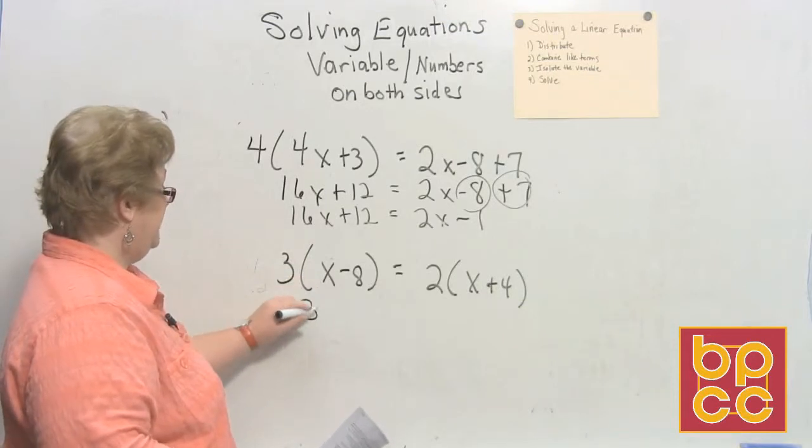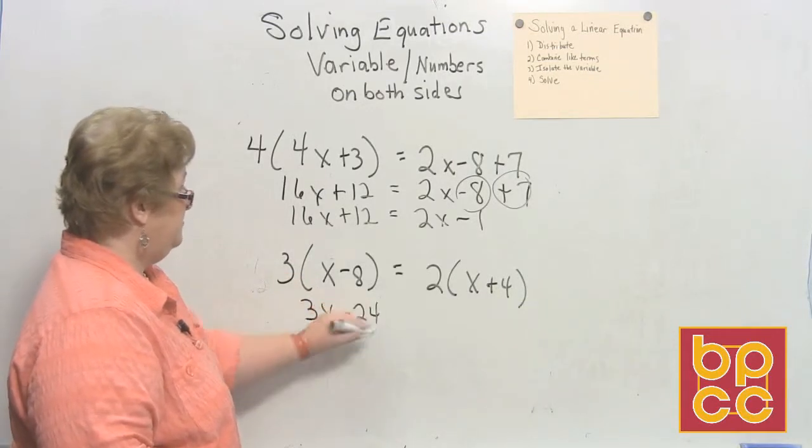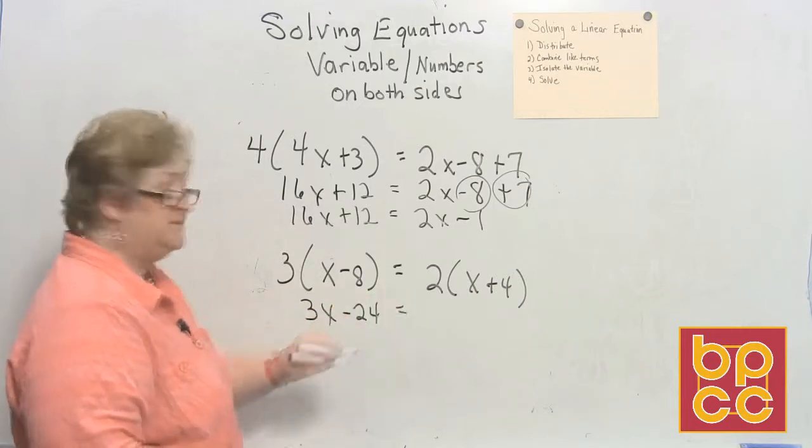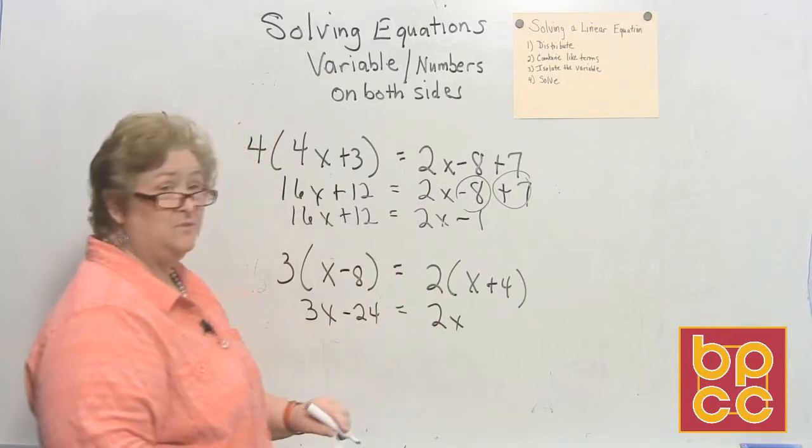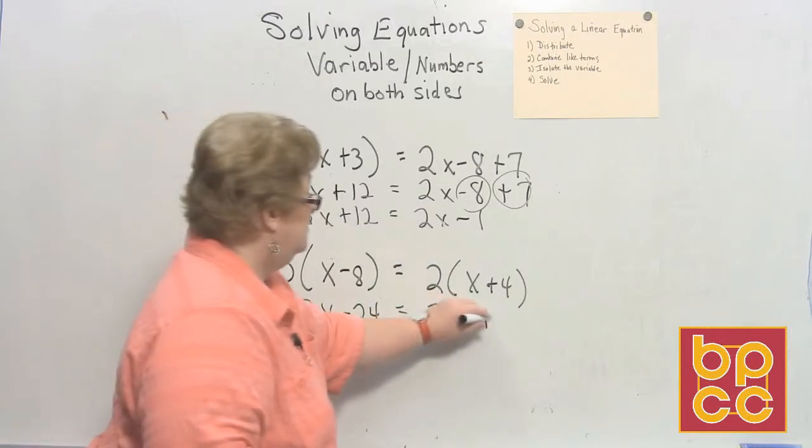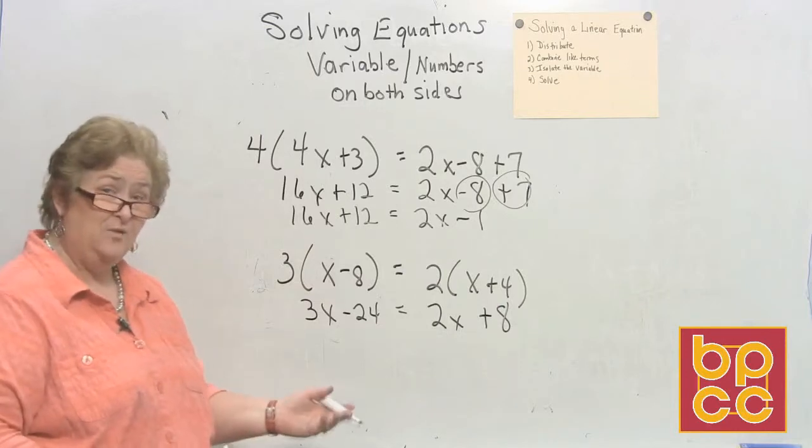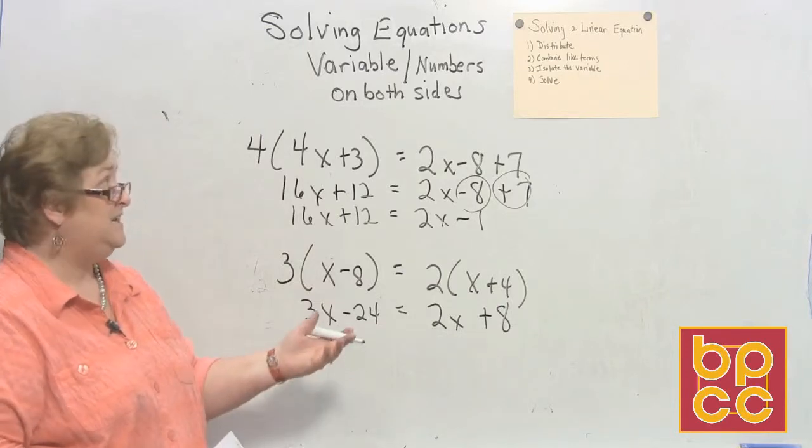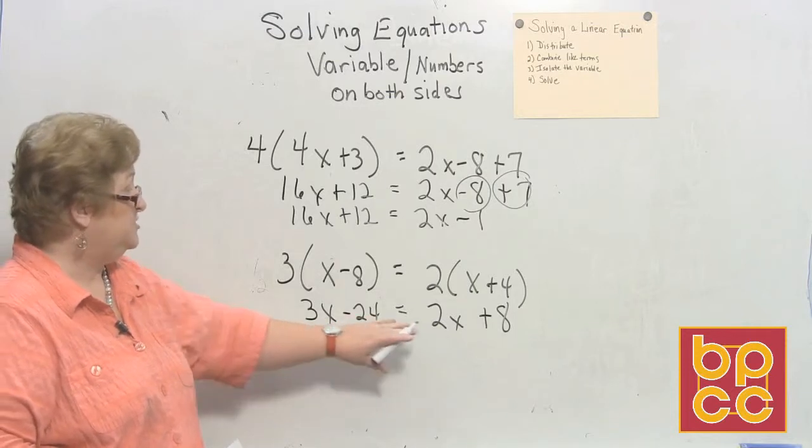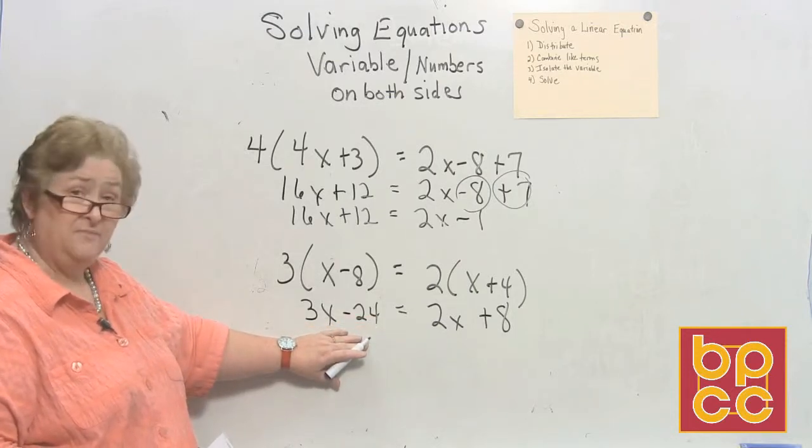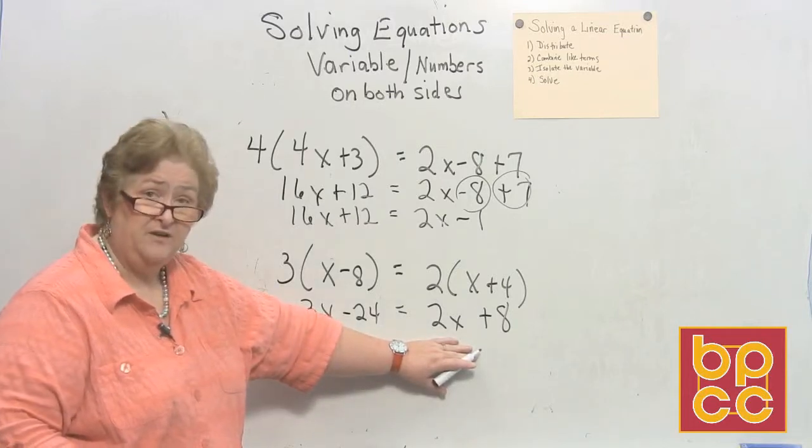3 times x is 3x. 3 times a negative 8 is a negative 24. And on the right hand side, 2 times x is 2x, and 2 times a positive 4 is a positive 8. Now what's different about this is now that we have distributed, I don't see anything to combine like terms on, because we're going to keep these as two separate sides. There's nothing to combine over here. You've got your x and your number, and you have your x and your number over here.